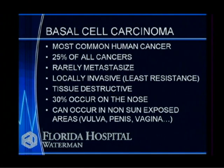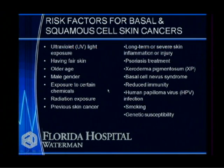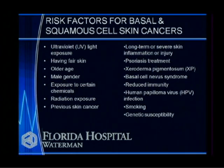Basal cell carcinomas can occur in areas never exposed to the sun, such as around the genitalia. Risk factors for squamous cell and basal cell carcinomas include UV light, particularly UVB — and UVA is also a risk factor. You get that principally from the sun. We know there's a strong epidemiological link between sun exposure and skin cancer: the incidence is very low in Helsinki, Finland, but through the roof in Australia due to proximity to the equator.